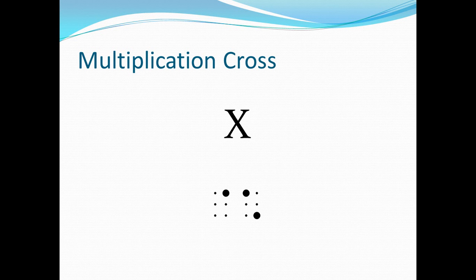The first thing that I'm going to share with you is the multiplication cross. We know that there are several ways to display the multiplication operation in both print and braille, and one of these ways is the multiplication cross. This sign is very similar to the letter X in print, and in braille this is a two-cell character. The first cell has dot 4 and the second cell has dots 1 and 6.